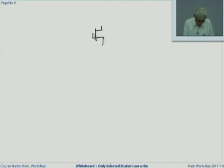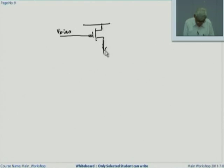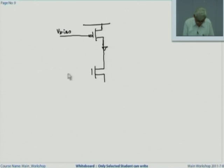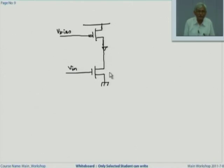Let me give you a quick example. Consider this MOS example. This is a P-channel transistor and I have some bias generated for it, so that this will feed a fixed amount of current. Now, if I put an N-channel transistor here and put my signal here, assuming that VIN is riding over some DC, which is high enough to turn this transistor on.